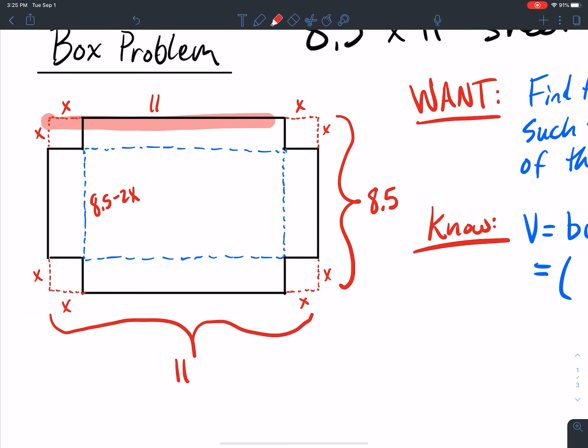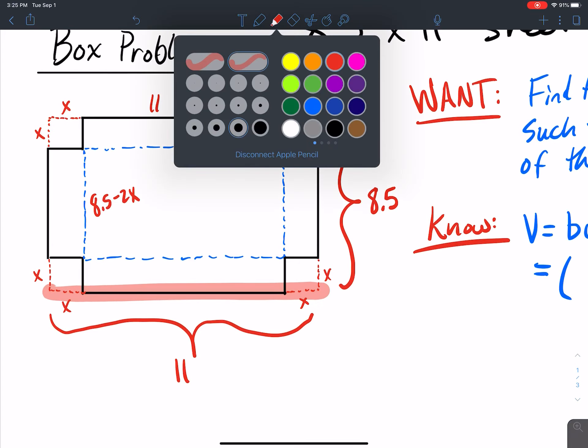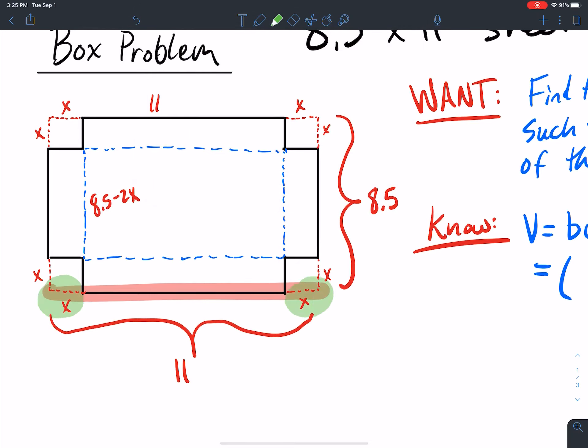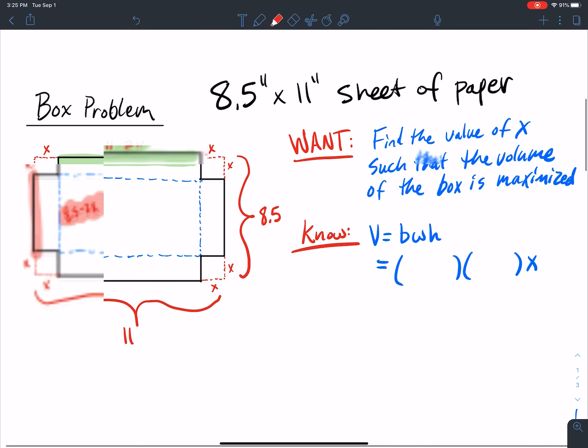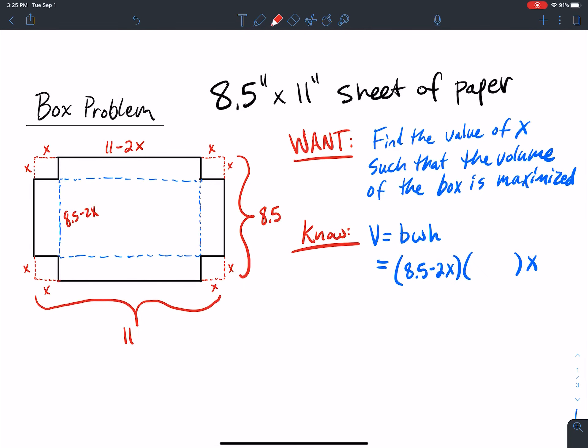The whole side here is 11, but if the whole thing is 11 and I need to take off an x here and an x here, I subtract 2x from 11. So this side here is 11 minus 2x, and this side here is 8.5 minus 2x. So my dimensions for the base is 8.5 minus 2x, and the dimensions for the width is 11 minus 2x.